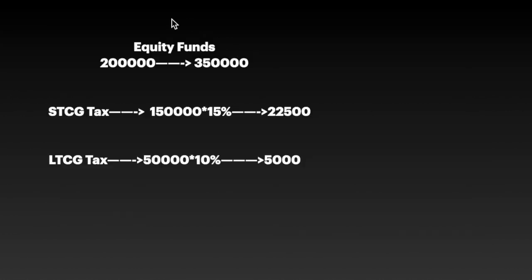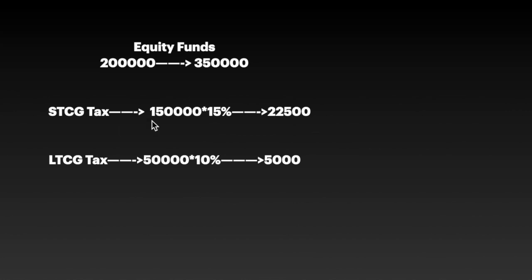Now let's take a calculation example. This calculation is applicable to equity funds. You invest in equity funds — let's take one index fund. You invest two lakhs, then you have three lakhs, so you have one lakh in gains. If you sell within one year, you are in short-term capital gain. The tax is flat 15%. You can note that this is the income tax department rule.